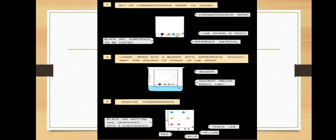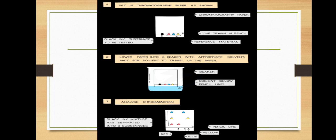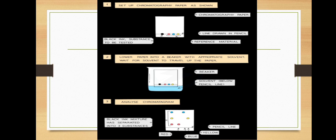Some important points for interpreting chromatograms: if two or more substances are the same, they will produce identical chromatograms. If a substance is a mixture, it will separate on the paper to show all different components as separate spots. An impure substance will show more than one spot, while a pure substance should show only one spot.